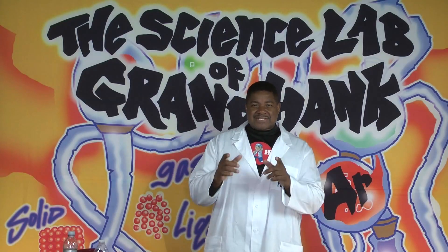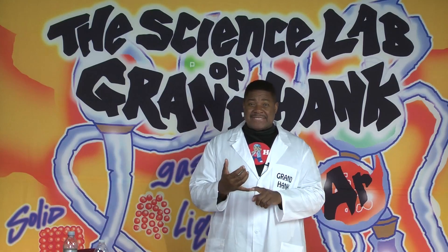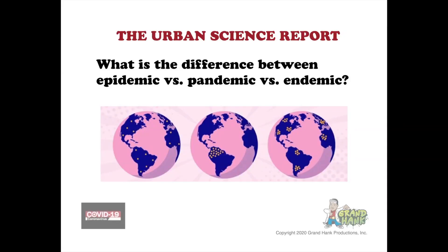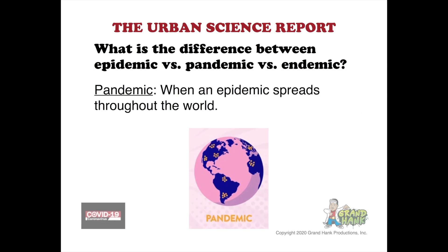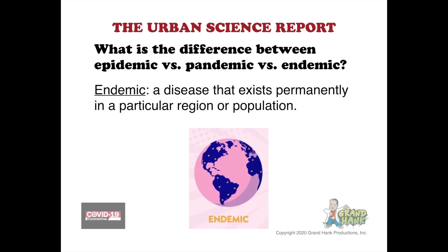What's the difference between an epidemic, a pandemic, and an endemic? An epidemic is an outbreak of disease that attacks many people around the same time and may spread through several communities. A pandemic, on the other hand, is when an epidemic spreads throughout the world. An endemic is a disease that exists permanently in a particular region or population.